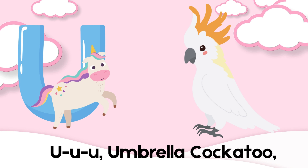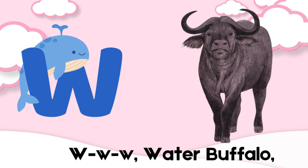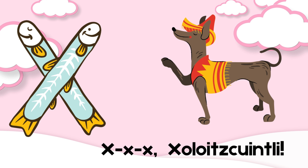U is for umbrella cockatoo, V-V-V-V. V is for vulture. W-W-W-W, W is for water buffalo. X is for X-animal. Y is for yak, Z-Z-Z. Z is for zebu. Now we've learned our ABCs, let's meet these animals, won't you please?